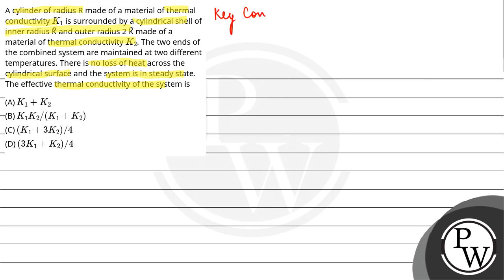So here our key concept will be thermal resistance. Thermal resistance is given by the formula RT is equal to L upon KA, where L is the length, A is the cross-sectional area, and K is thermal conductivity. You have two cylinders.